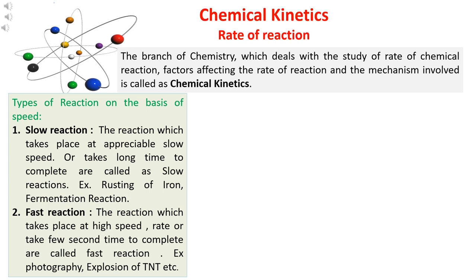On the basis of speed or rate of reaction, reactions are of two types: slow reactions and fast reactions. Slow reactions are those which take place at appreciably slow speed and take a long time to complete — for example, the rusting of iron and the fermentation process. Fast reactions are those which take place at very high speed and are completed in a few seconds — for example, photography or the explosive reaction of TNT.